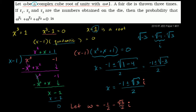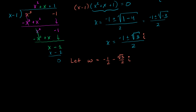So that first statement translates into this definition of omega. Now, a fair die is thrown three times, and r1, r2, r3 are the numbers obtained. We need the probability that omega to the r1 plus omega to the r2 plus omega to the r3 equals 0. Since we'll be taking omega to different powers, let's figure out what happens with those powers. This right here is clearly omega to the first power.